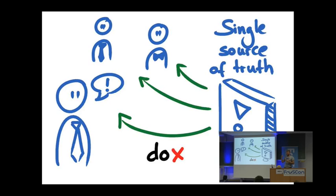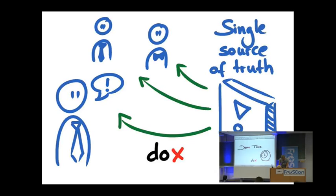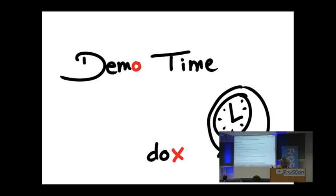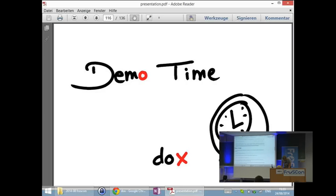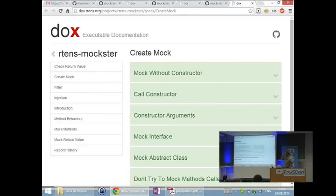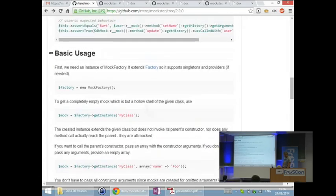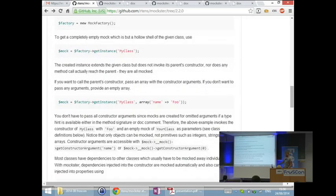People have to agree on one language, one term for things, because it's code and it doesn't like ambiguity. So now I think it's a good time to show you how it looks. This is the documentation of Moxter, as you can see — I really put a lot of effort into it with color coding and everything. I wrote a test file called 'introduction test' where I put the specification of the whole library. It shows you how to create mocks, how to filter functions, how the injection works.